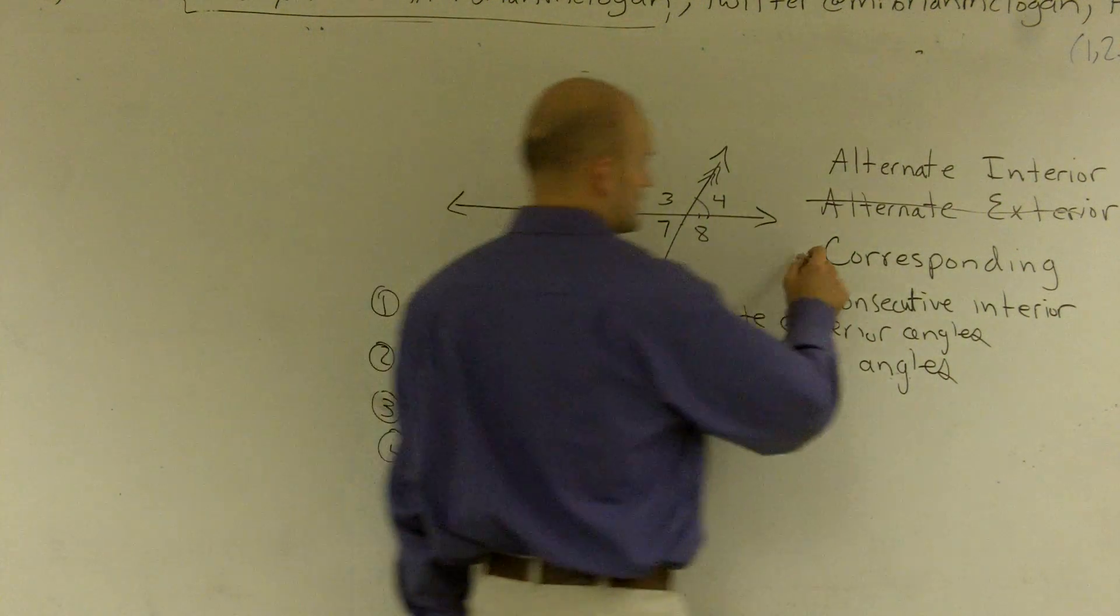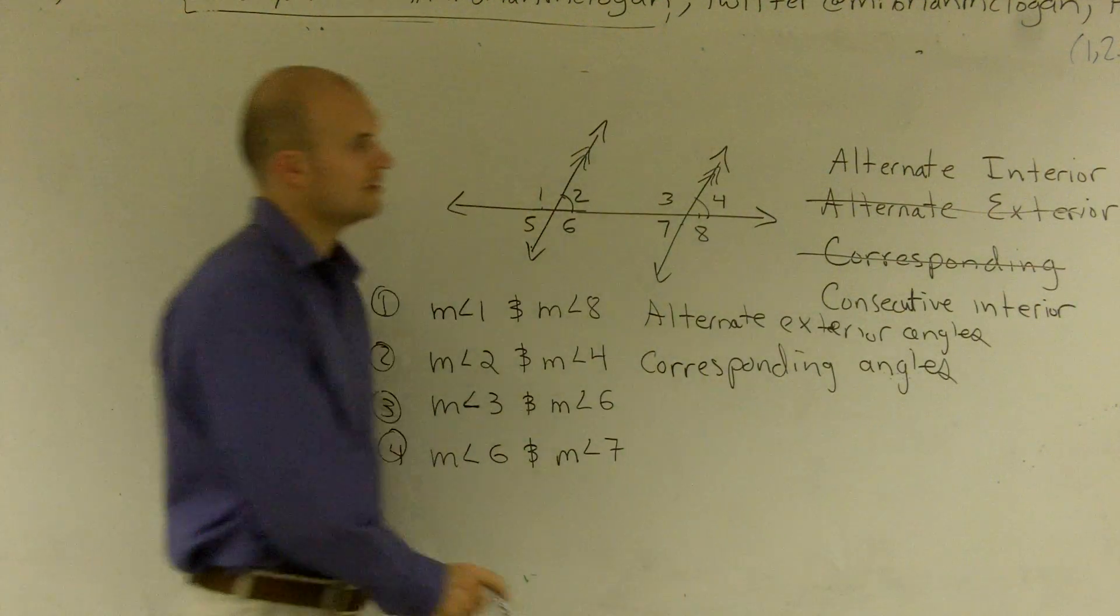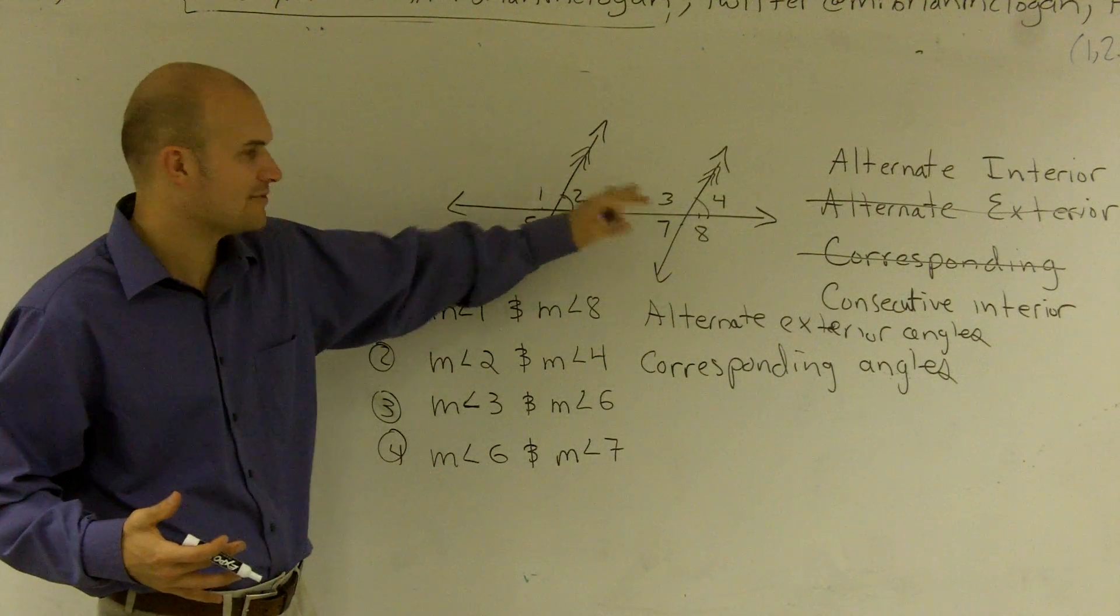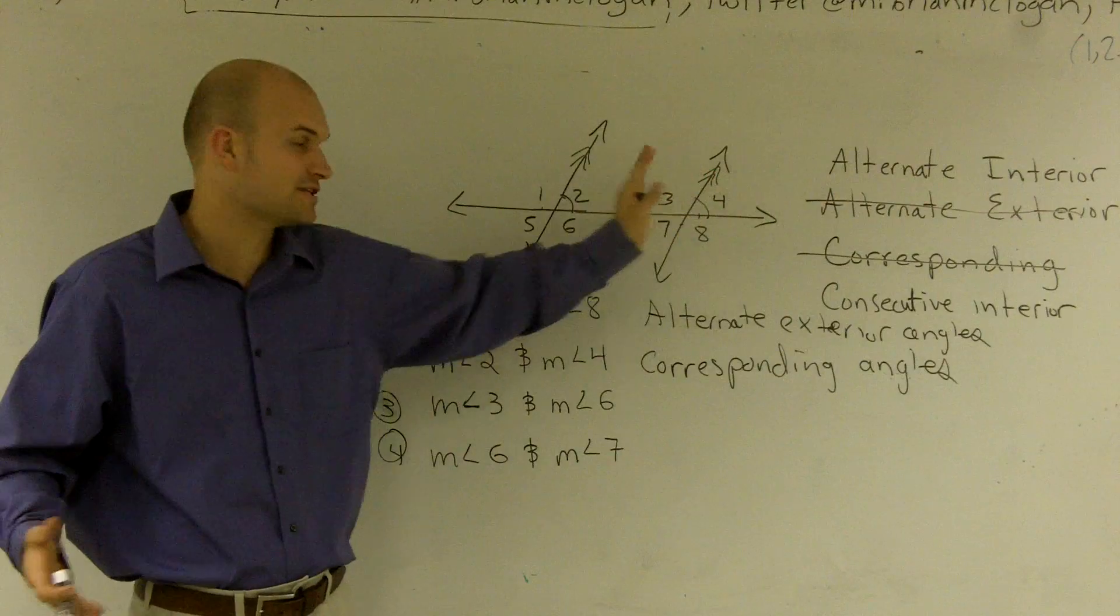So now we're done with corresponding angles. All right? They correspond to one another. They're exactly in the exact same shape. They're exactly in the exact same spot for each intersection.